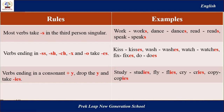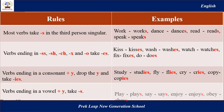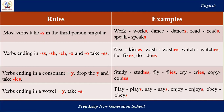The last rule: verbs ending in a vowel plus -Y always take -S at the end of the verb. For example: play becomes plays, say becomes says, enjoy becomes enjoys, obey becomes obeys. For example: She plays piano very beautifully. I hope everyone understands the rules I have just presented.